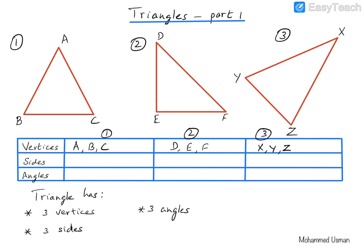The triangle is a figure which has three sides. The sides are the lines which close in to form the triangle. For triangle number one, the three sides are AB, BC and AC. You can change the order of the points on the lines — it doesn't make any difference.